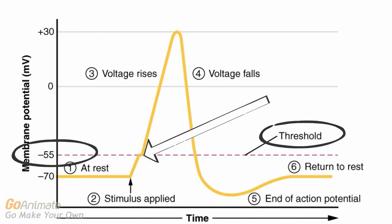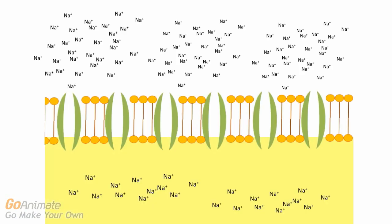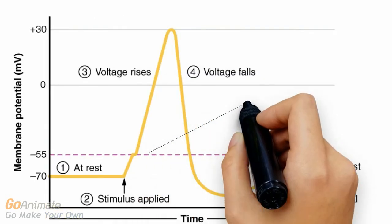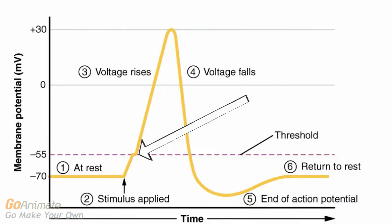This continues until the voltage reaches the threshold, which for neurons is about negative 55 millivolts. Once the threshold is reached, many voltage-gated sodium channels open, allowing sodium into the cell. This causes the membrane voltage to change, reaching about positive 30 millivolts. The neuron has now generated an action potential.